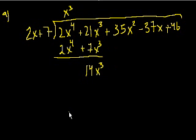And then you could bring down all of this, but we can worry about that in a second. So how many times does 2x go into 14x to the third? Well, 2 goes into 14 seven times, plus 7. And x goes into x to the third x squared times. And if we're right, when we multiply, it should work out.